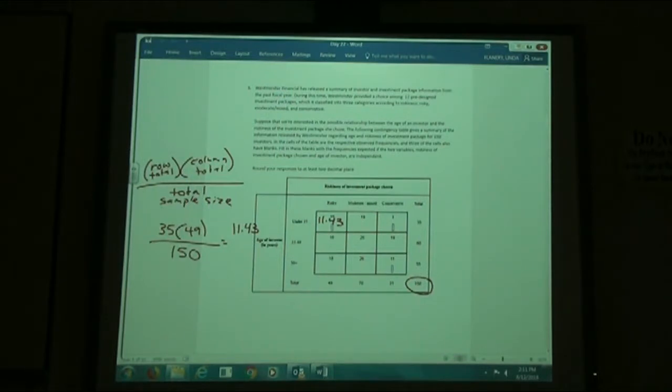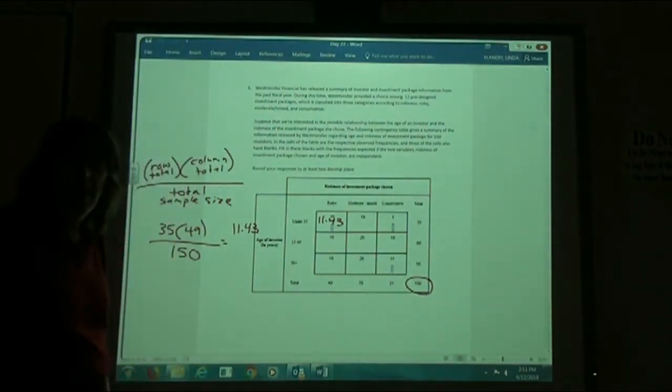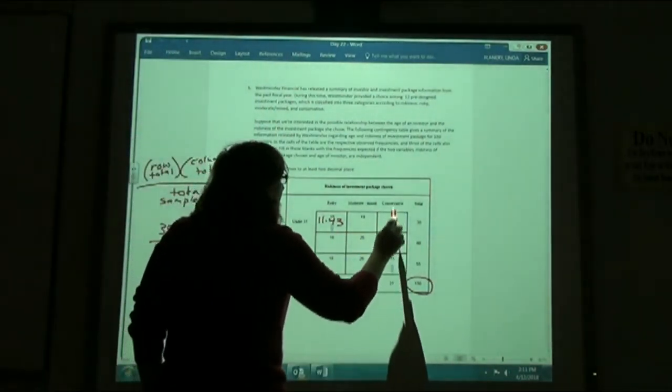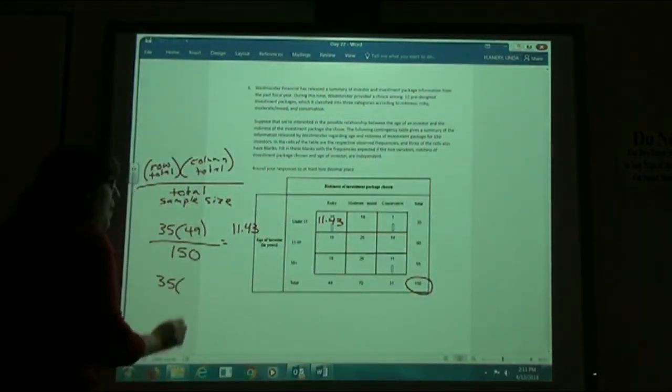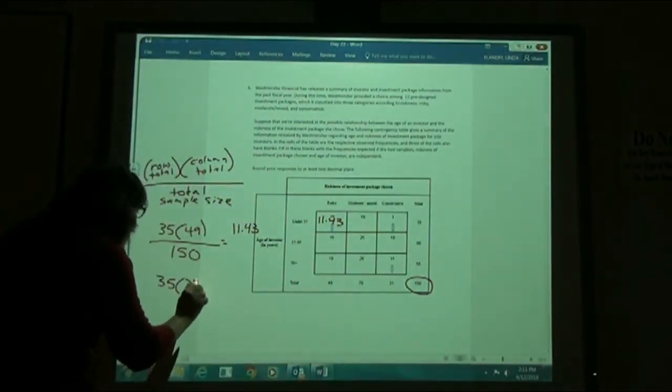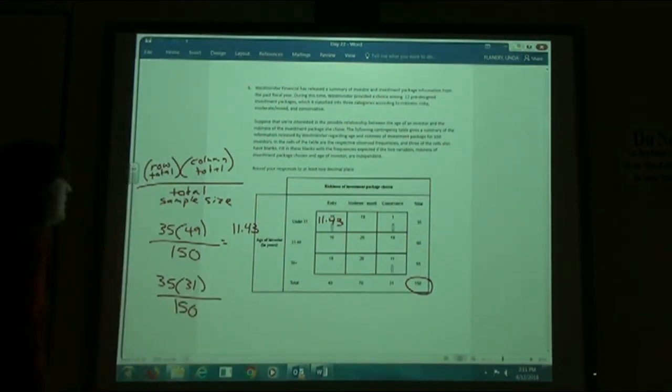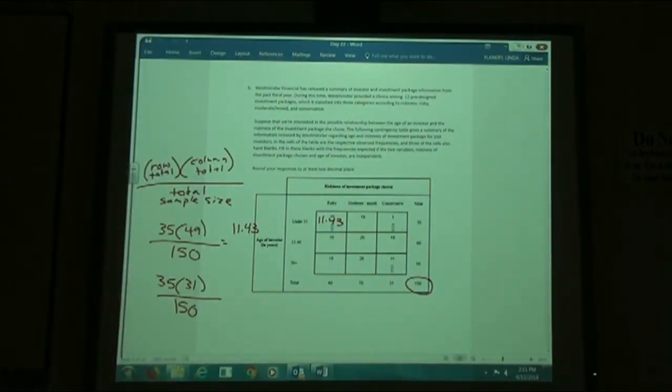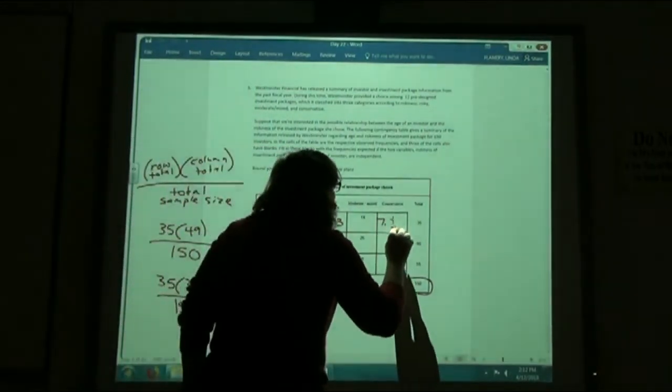The next one, way over here where we have the one conservative that is under 35. Evidently the under 35s are more risky. So our row total is 35, our column total is 31, and sample size, 150. So 35 times 31 divided by 150 gives me 7.23.